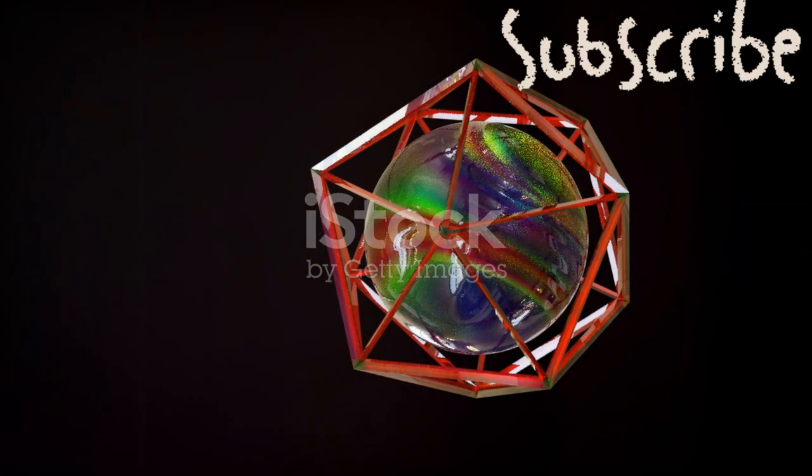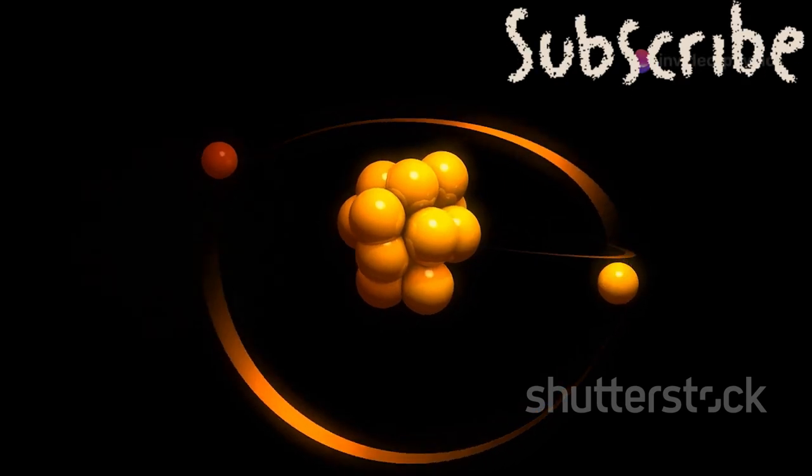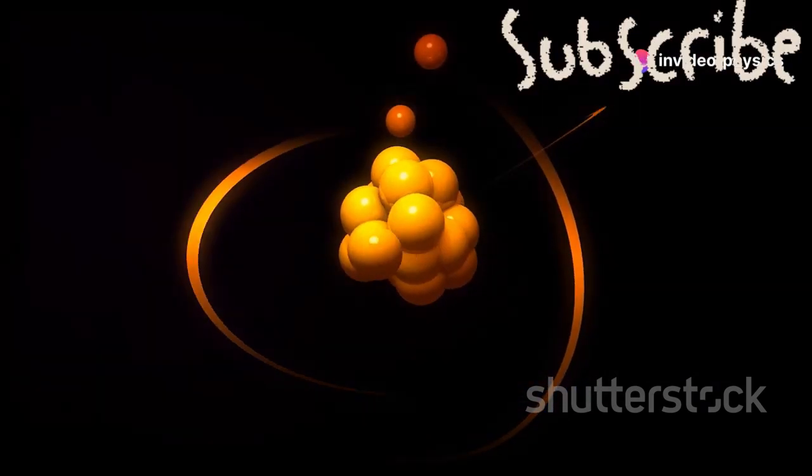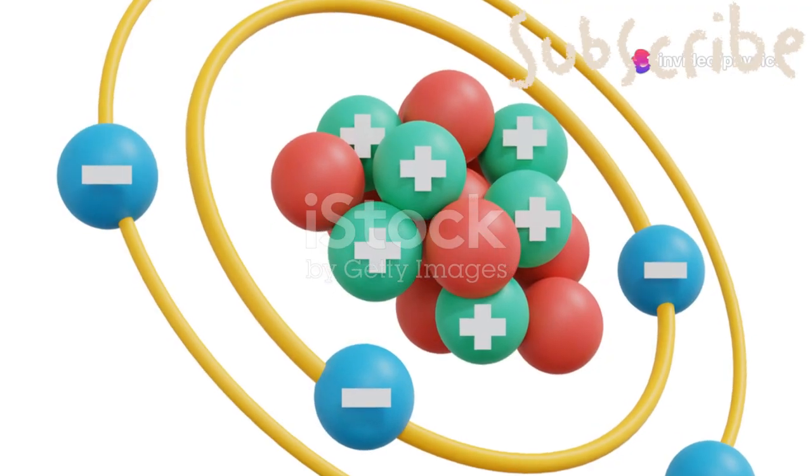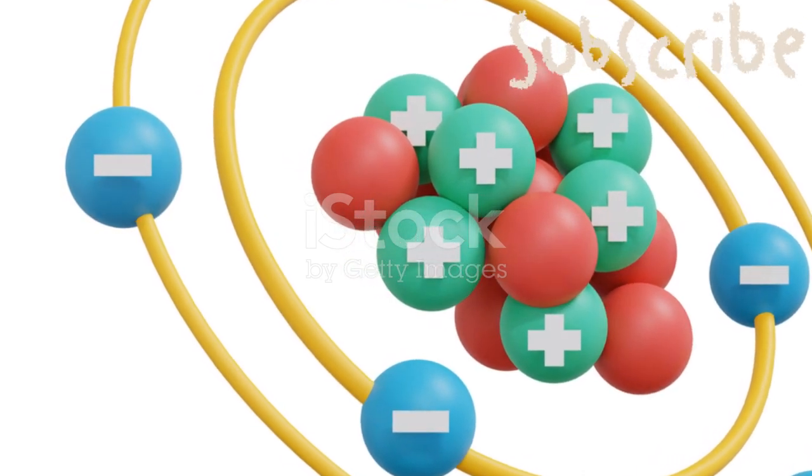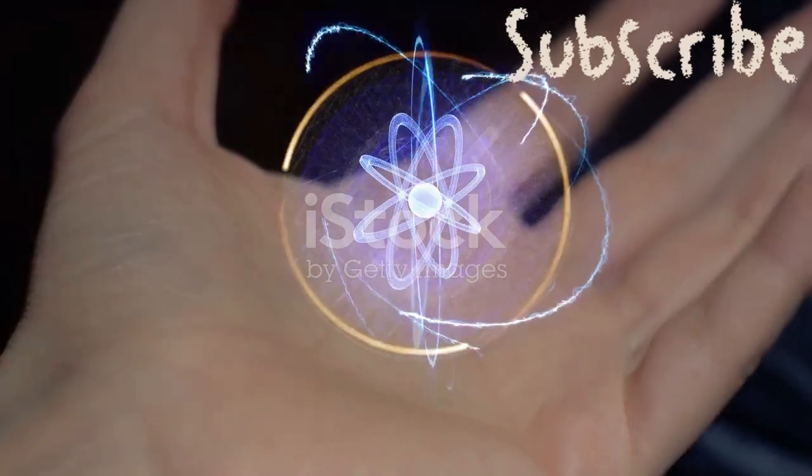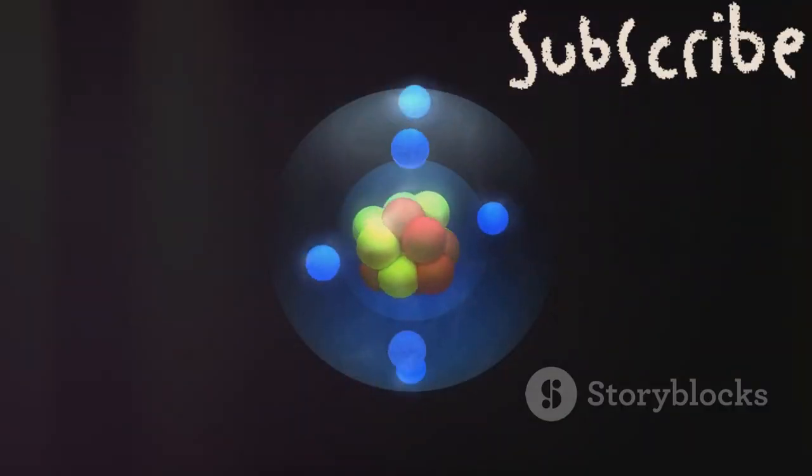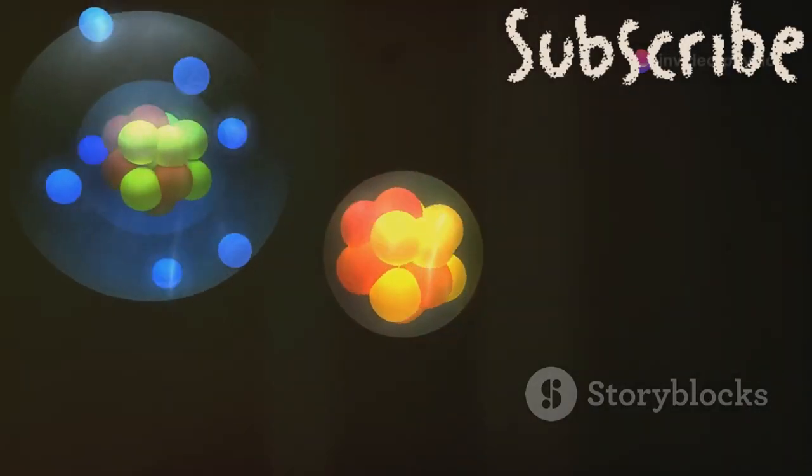But what exactly makes up an atom? Let's break it down. First, we have electrons. These are negatively charged particles buzzing around the nucleus in shells. They have a charge of minus 1 and are light as a feather, weighing just 1/1840 of an atomic mass unit.